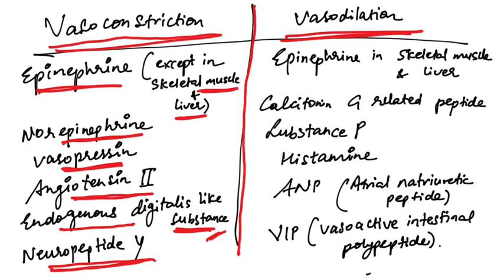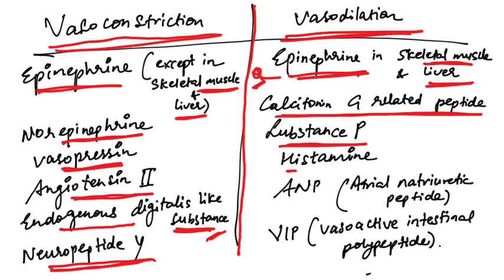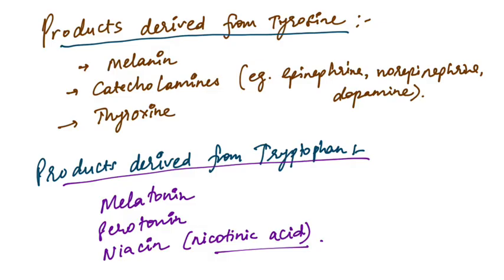For vasodilation, epinephrine in skeletal muscles and liver is a vasodilator while being a vasoconstrictor elsewhere in the body. Calcitonin G-related peptides, substance P, histamine, ANP (atrial natriuretic peptide), and VIP (vasoactive intestinal polypeptide) are vasodilators. Remember these as they are frequently asked.